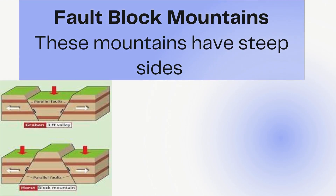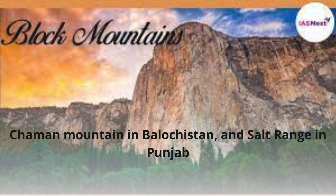Fault block mountains have steep sides. Examples of block mountains include Chiman Mountain in Balochistan and the Salt Range in Punjab.